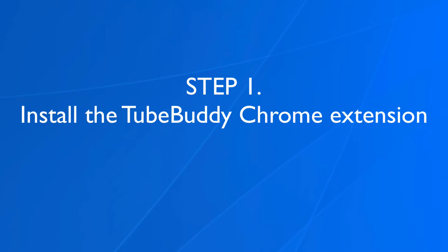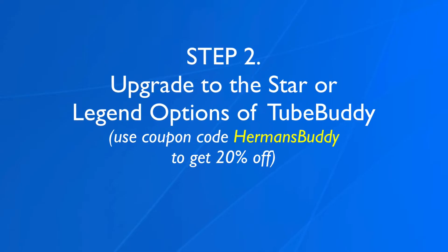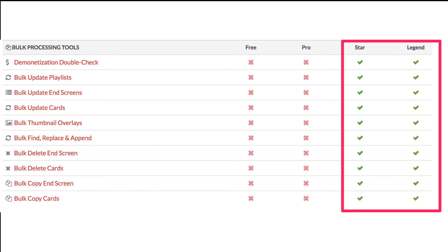Here's how to change multiple YouTube video descriptions using the TubeBuddy Chrome extension. Step one, install the TubeBuddy Chrome extension by going to TubeBuddy.com/iSiteBuild. Step two, upgrade to the star or legend options of TubeBuddy. Use coupon code hermansbuddy to get 20% off. This means you can also use all the bulk processing tools to get more views and subscribers to your channel.